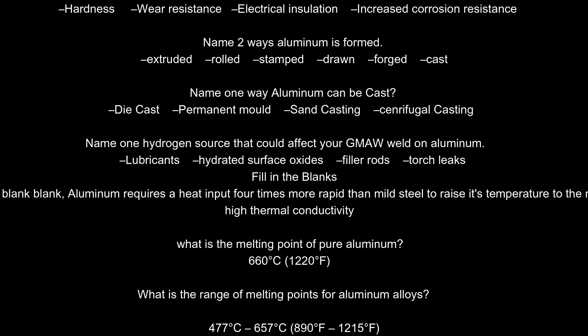What does anodizing do? It makes the oxide layer thicker through an electrochemical process. What is one of the properties anodizing changes? Hardness, wear resistance, electrical insulation, and increased corrosion resistance.